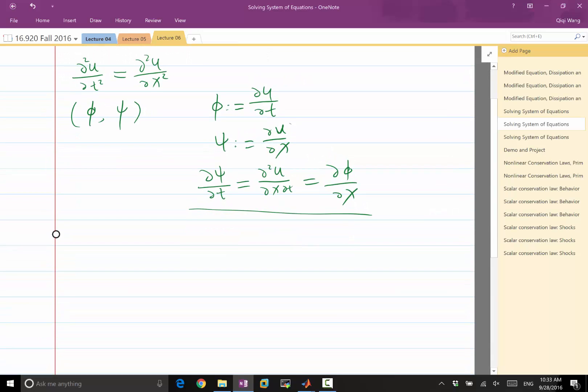Another equation we can obtain is from the equation. So, the equation partial square u partial t square can be written as a time derivative of a time derivative, which is time derivative of phi. It is equal to the spatial derivative of u, which is partial derivative of partial derivative, that is partial psi partial x.